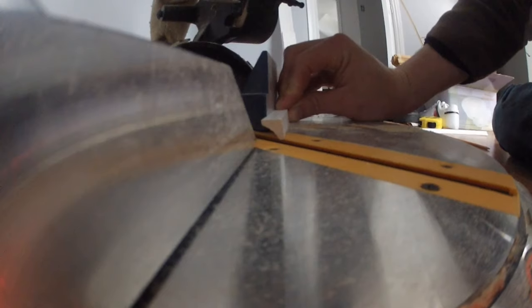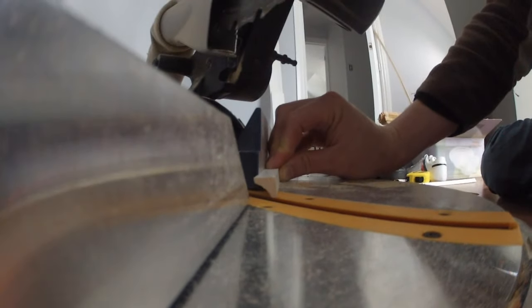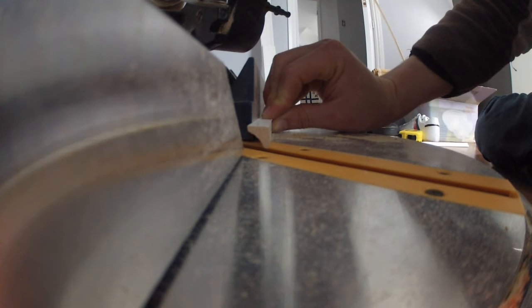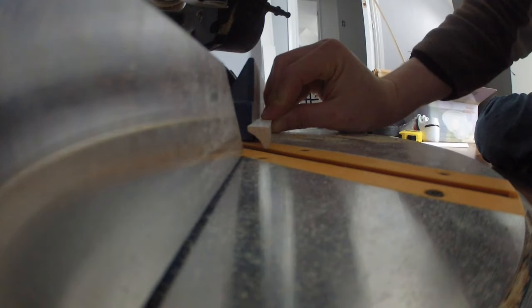Now once you've gotten that, you're going to put your molding on the other side of your guard, similar to what we did before, and go ahead and make your cut.